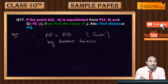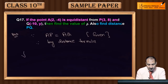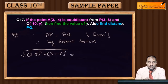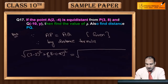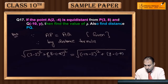Pehle AP nikalenge. A yahan par (2, -4) hai, P hai (3, 8). Toh AP = √[(3−2)² + (8−(−4))²]. Uske baad AQ nikalenge: Q ke coordinates (−10, y) lenge, toh AQ = √[(−10−2)² + (y−(−4))²].